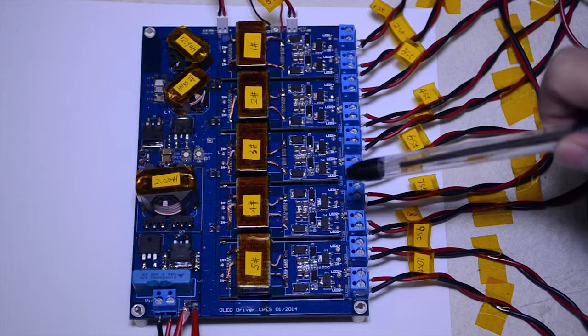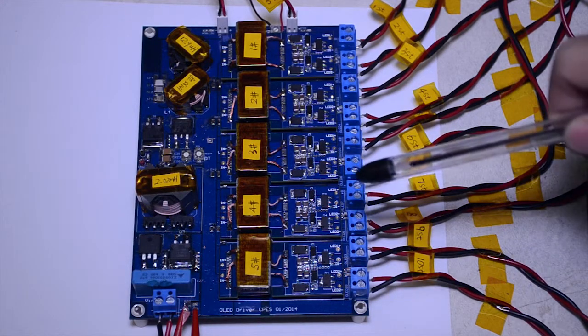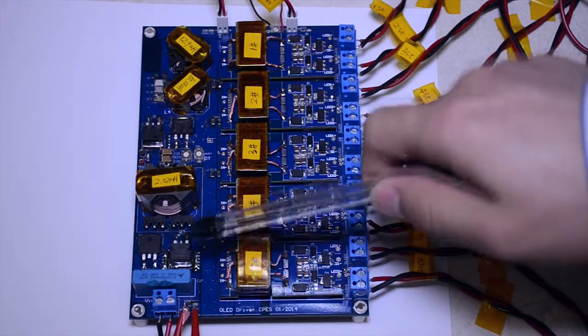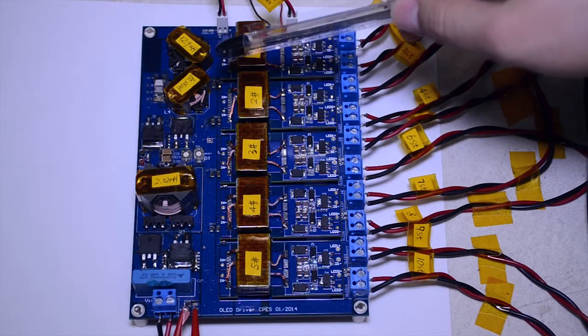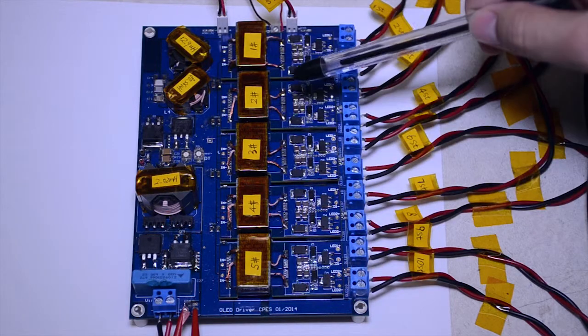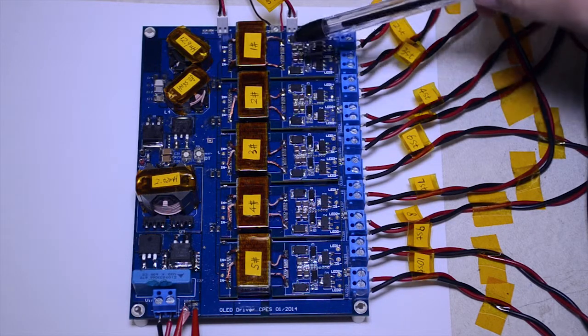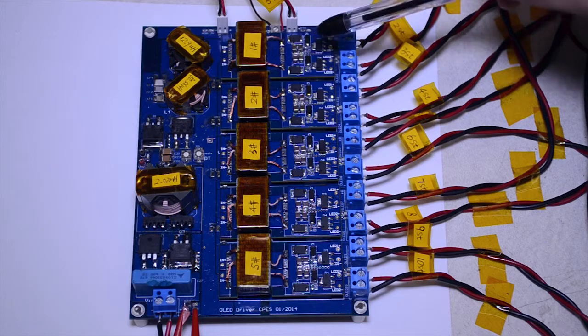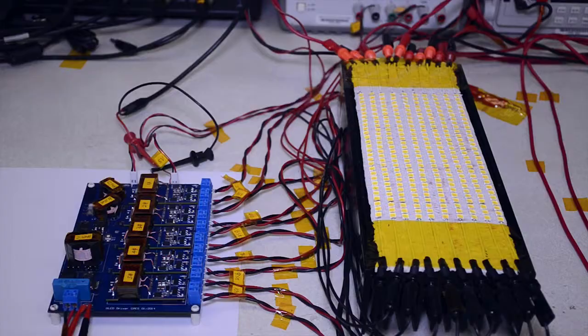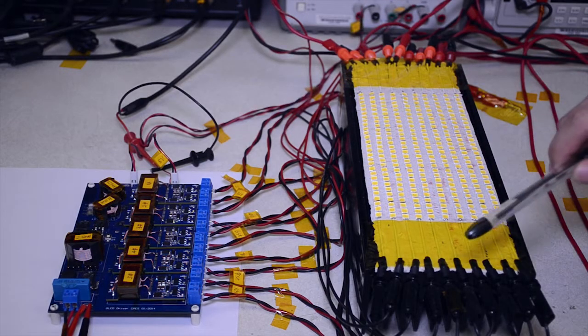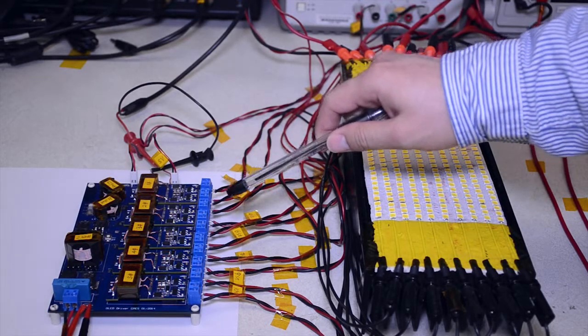Here is the prototype of the two-stage LED driver. This part is the buck converter, and this part is the CLL resonant tank. These are five transformer modules, and each module drives two LED strings at the same time. These 10 LED strings will be driven by this two-stage LED driver.